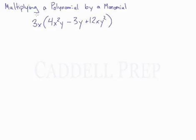So we have a monomial, one term, and a polynomial which is multiple terms.